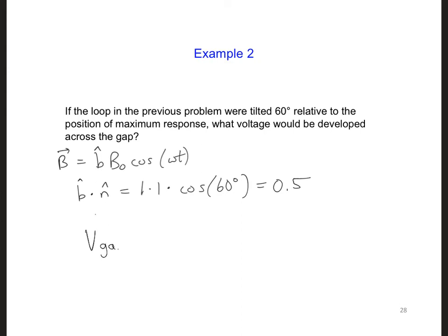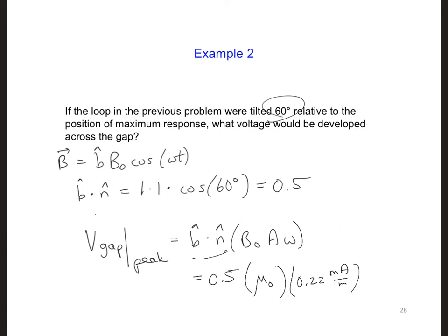So, now, V gap at the peak, at this new angle, as long as we're at 60 degrees here, is going to be equal to B hat dotted with N hat times B naught A omega. And we already know the strength of our incoming waves, so B dot N hat, we just calculated as 0.5. B naught is going to be mu naught times the H that we calculated in the last problem, which is 0.22 milliamps per meter.